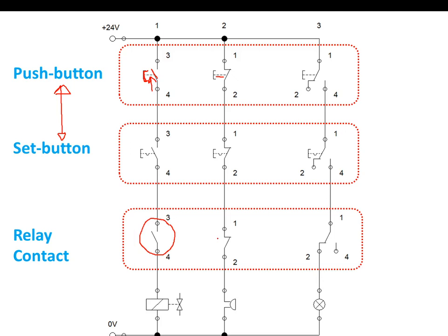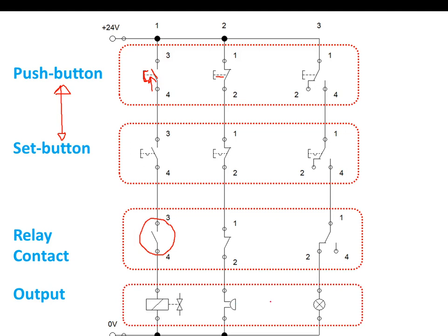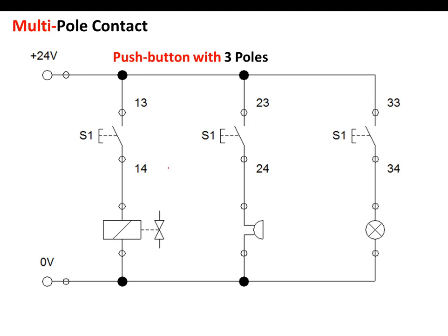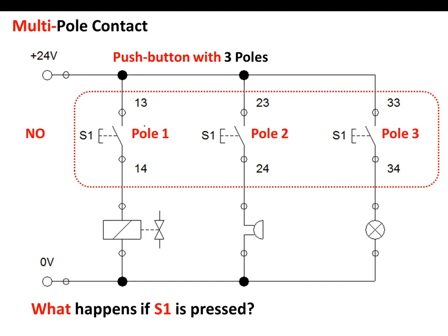The outputs include solenoid, buzzer, and lamp. With regard to poles and contacts, a pole refers to the first figure in the numbering system — one refers to pole one, two to pole two, three to pole three. The second number is the contact number: 3-4 means normally open. The benefit of multiple contacts is that once the push button is pressed, all poles are simultaneously activated.